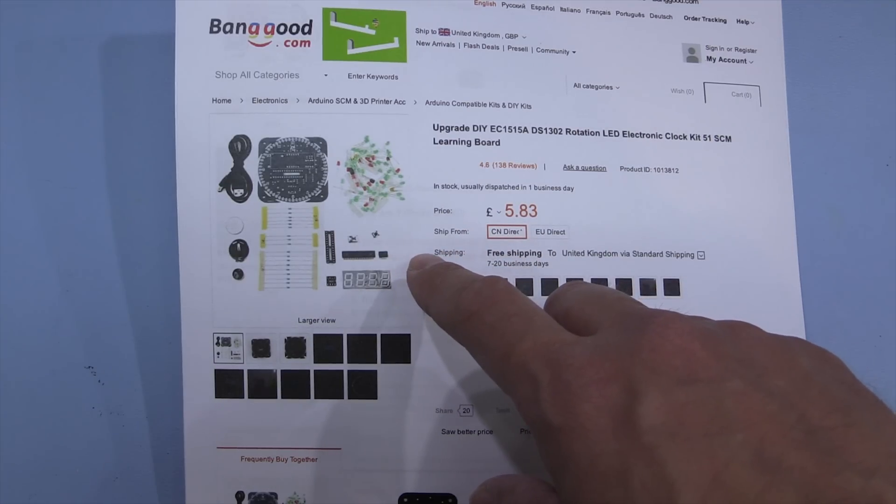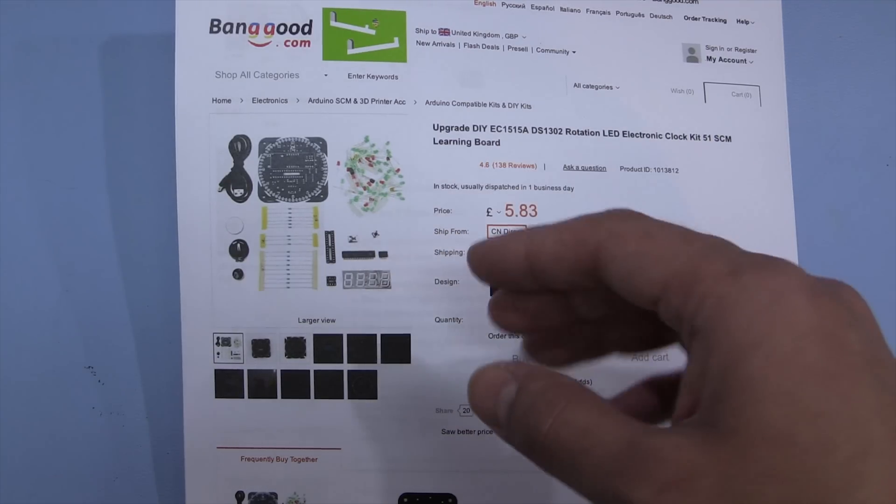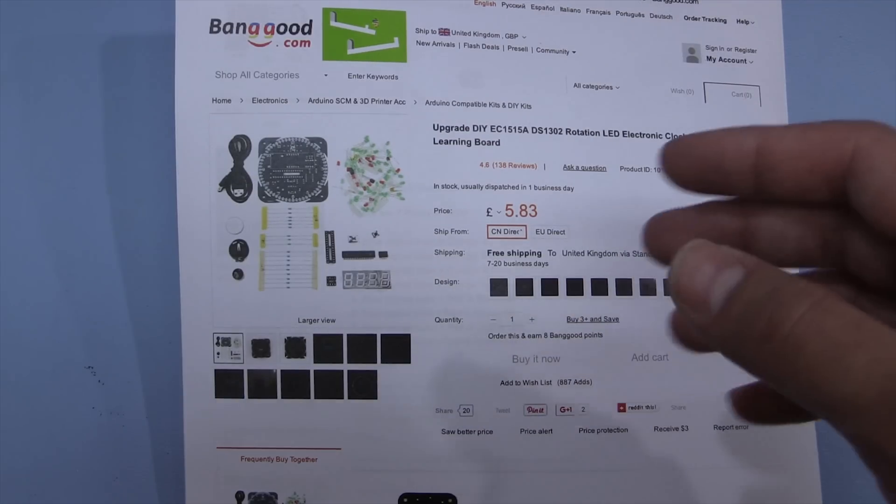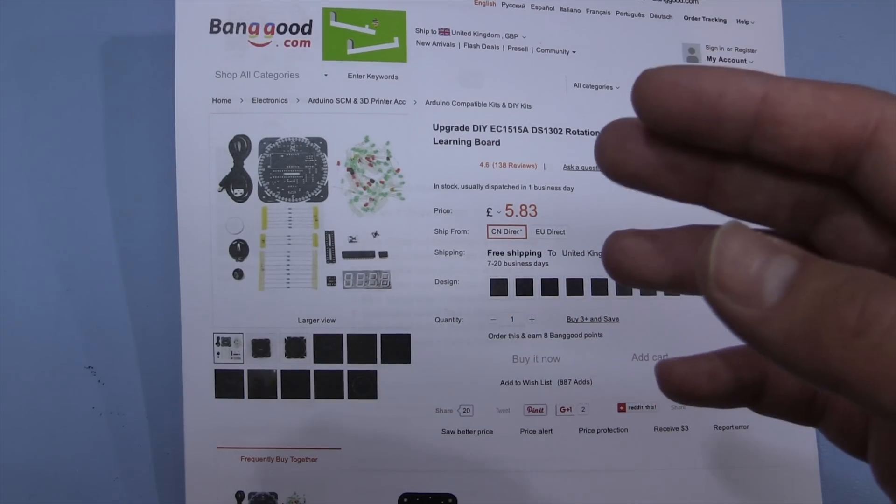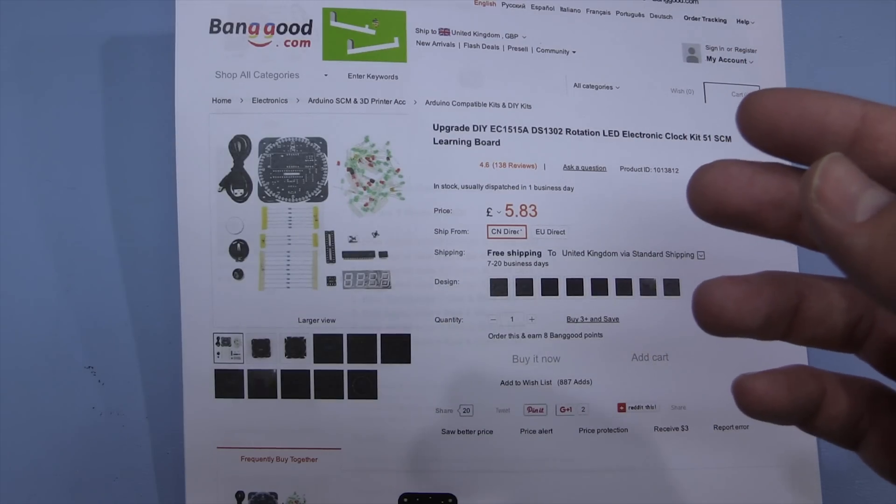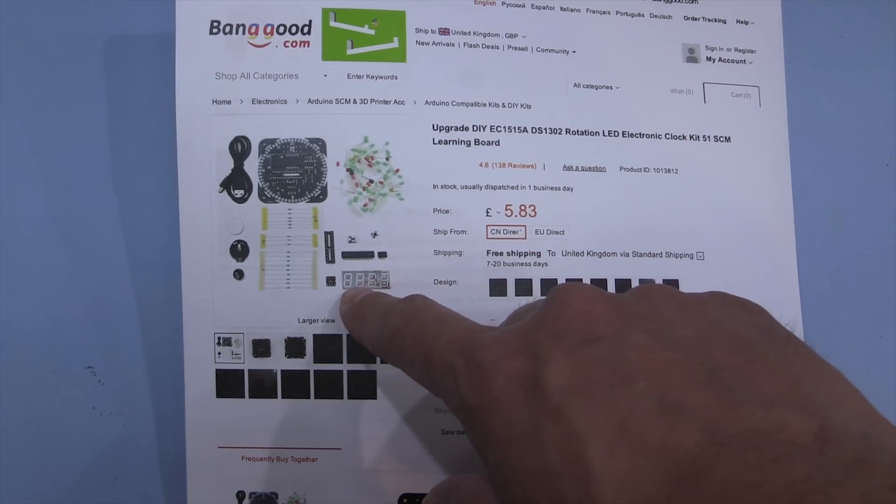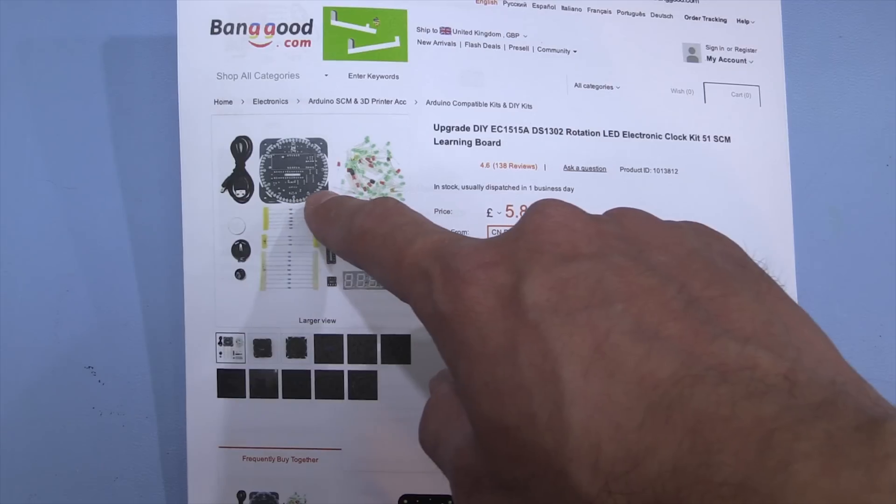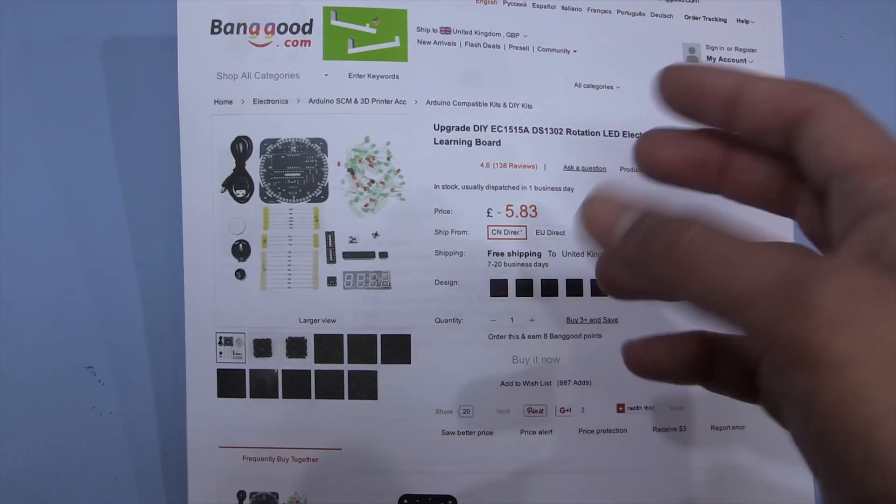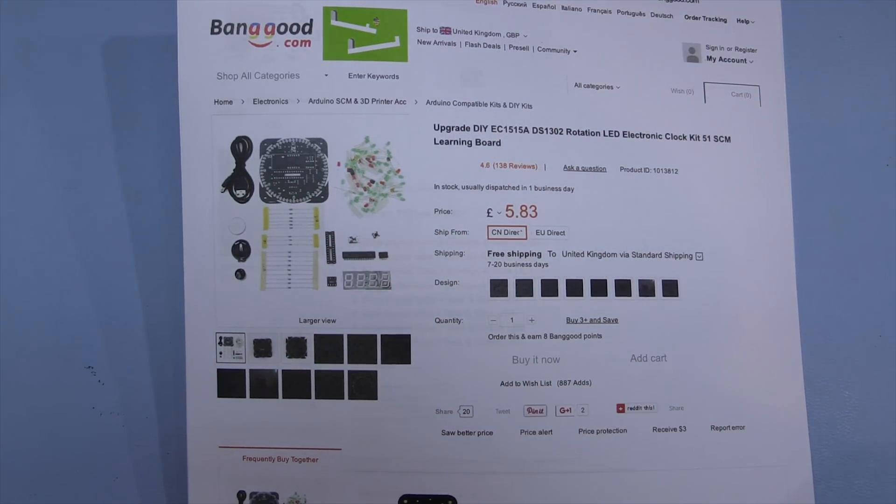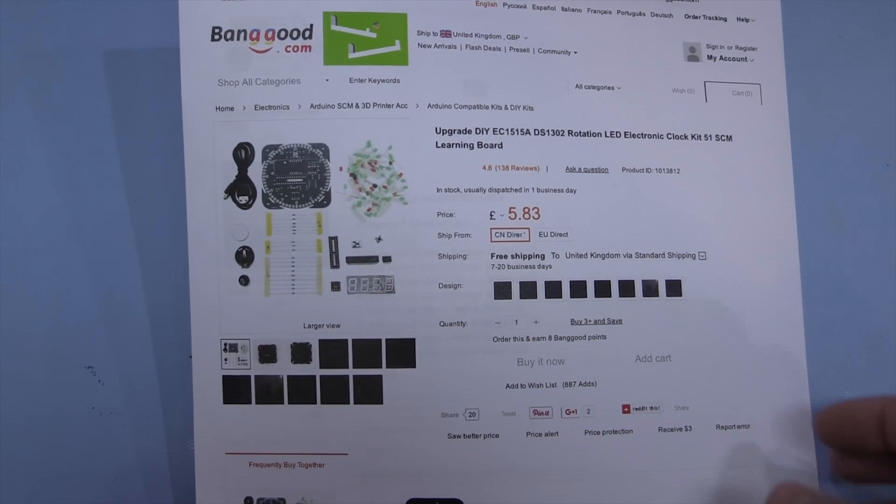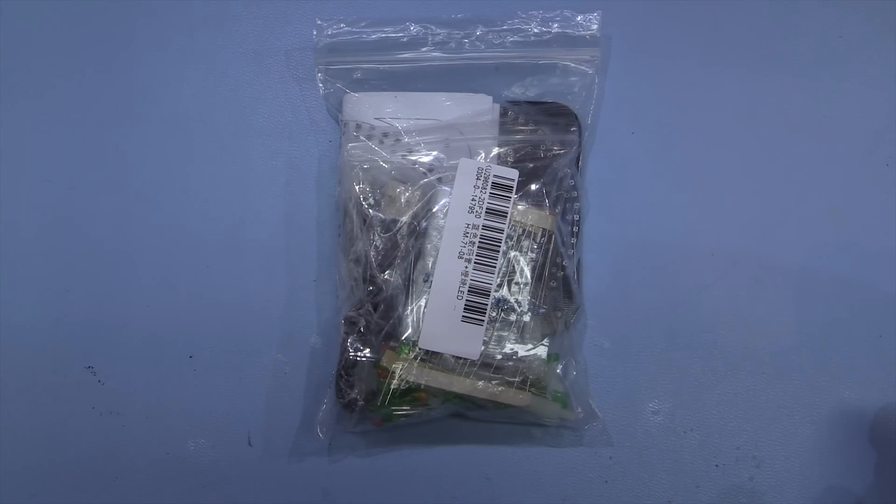This one has an STC microcontroller on here so probably the chances of reprogramming the code are fairly limited. I think the development tools are a little bit limited over here in Europe anyway. It's got a seven segment display which tells the time and then a whole ring of LEDs around the edge of the PCB which I think do seconds but also can do some animations and stuff. These are £5.83. I obviously got sent it free of charge. So let's have a look at what you get inside the kit.